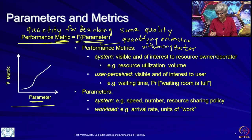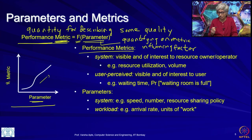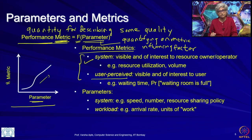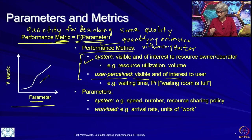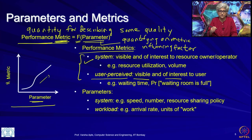Let us talk about performance metrics in computer systems. In general, there are two types of metrics: system metrics and user perceived metrics. User perceived metrics are metrics that are visible and felt by, and are of interest to, the user of the resource. For example, waiting time is something that is felt by the user — how much time you are waiting at an escalator or in a queue.